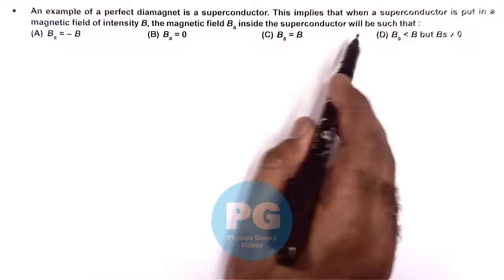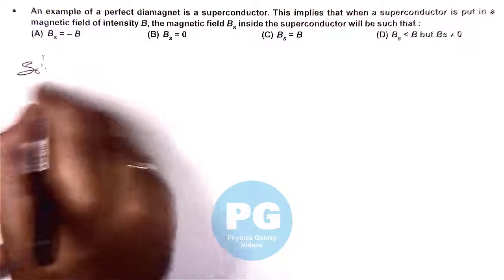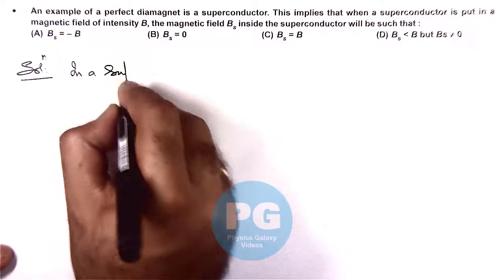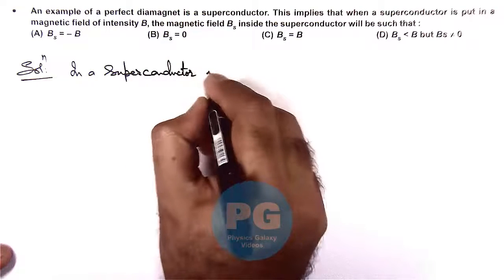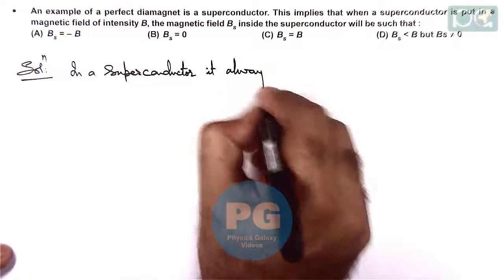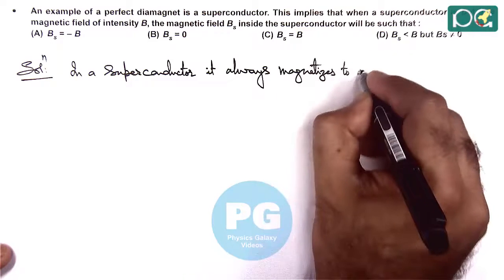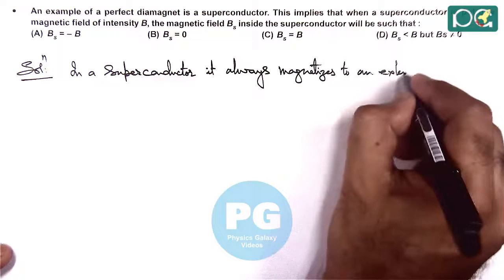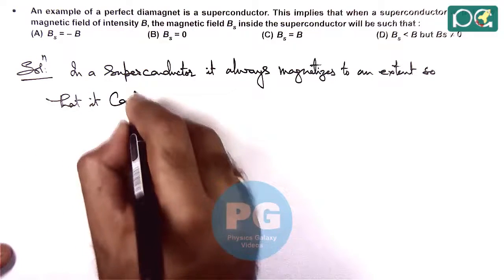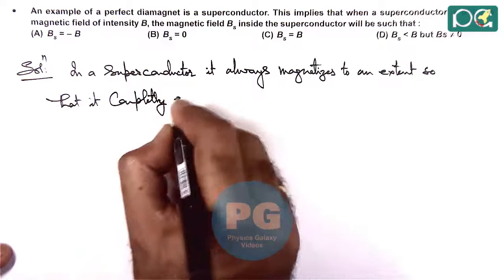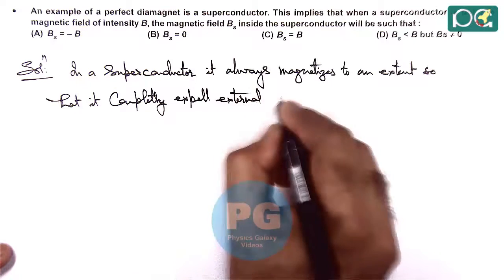the magnetic field B inside the superconductor will be such that, so we already discussed that in a superconductor, it always magnetizes to an extent